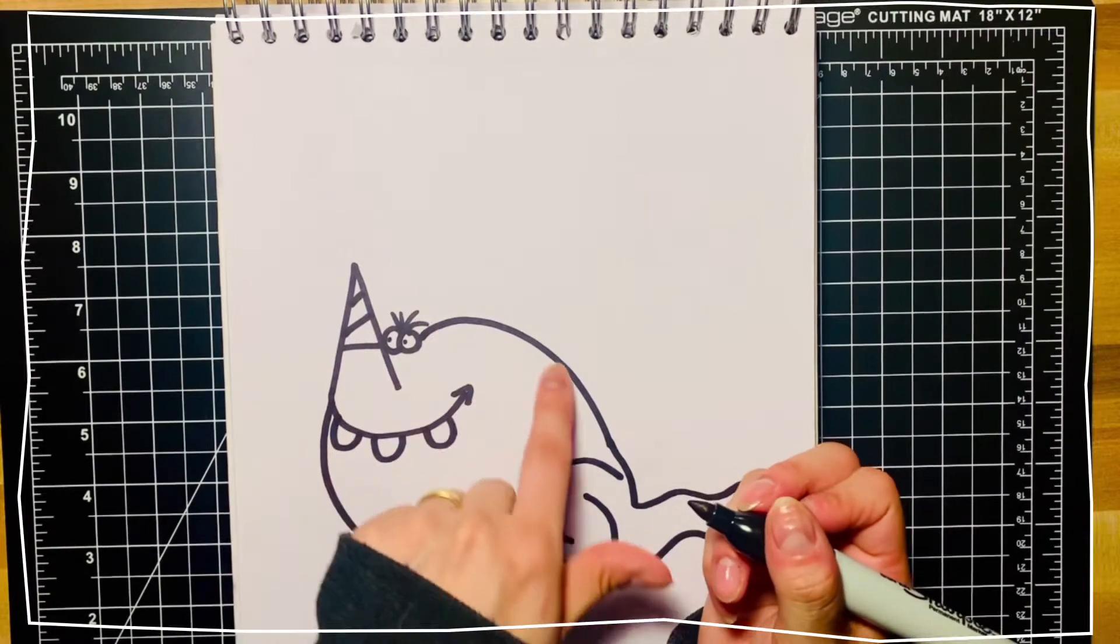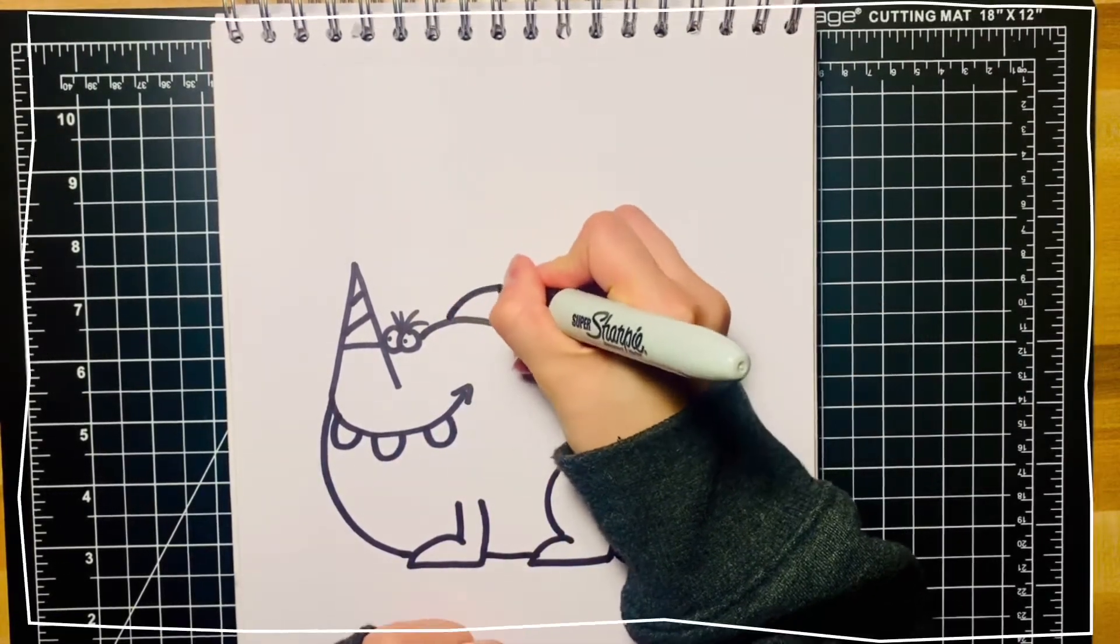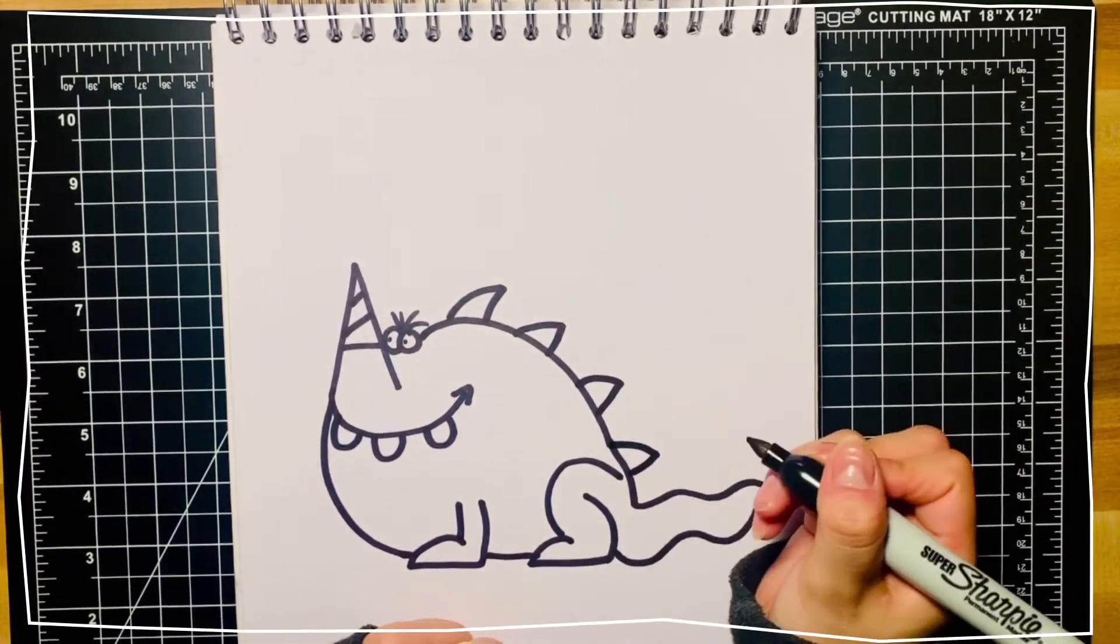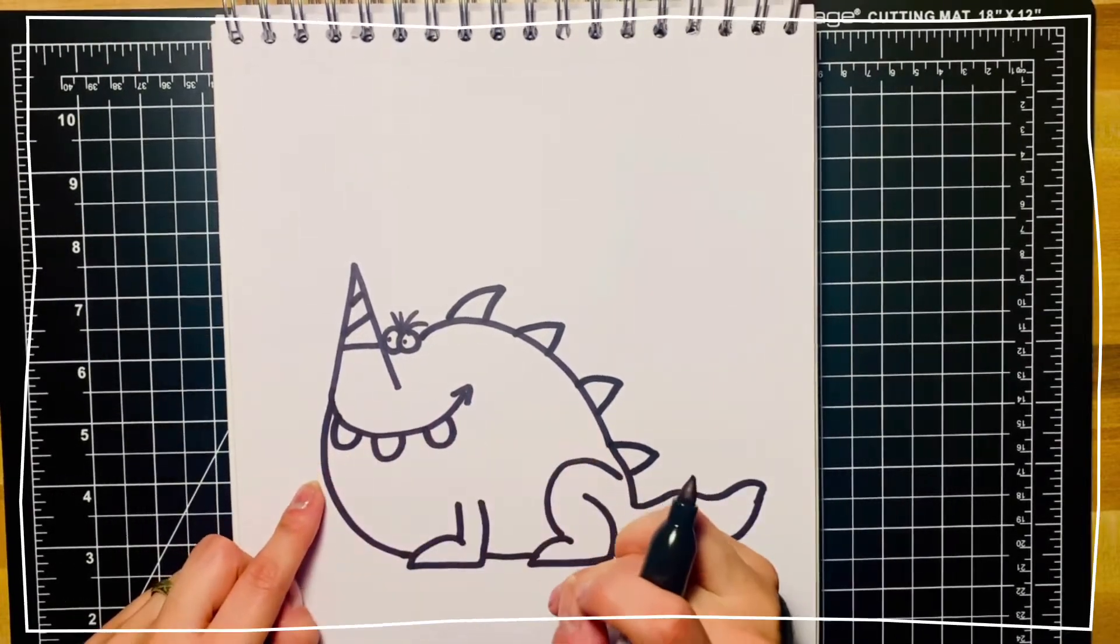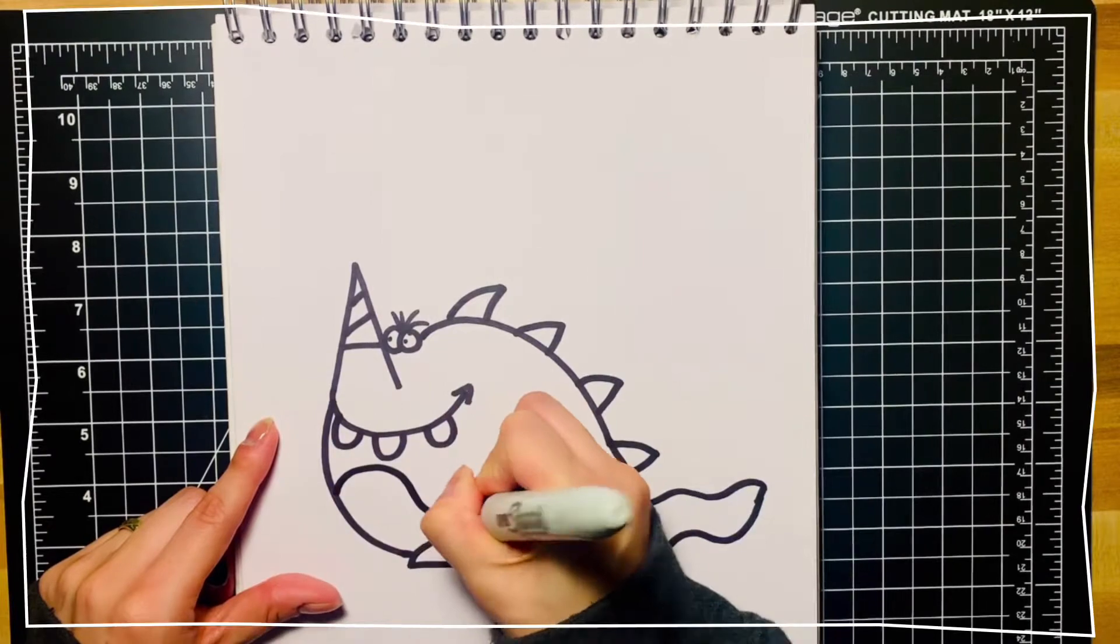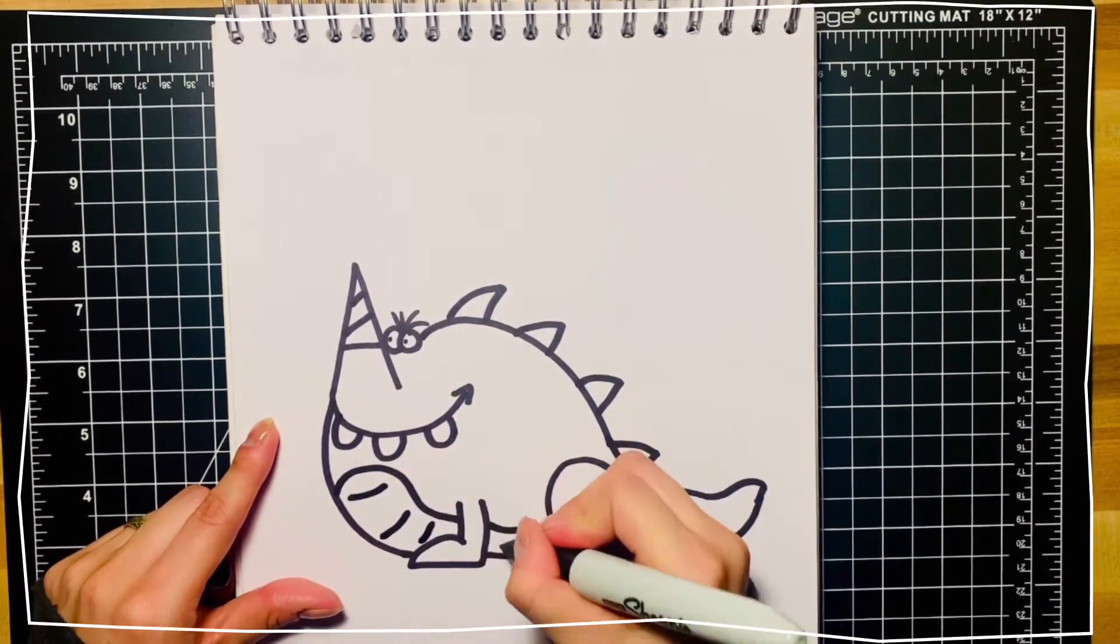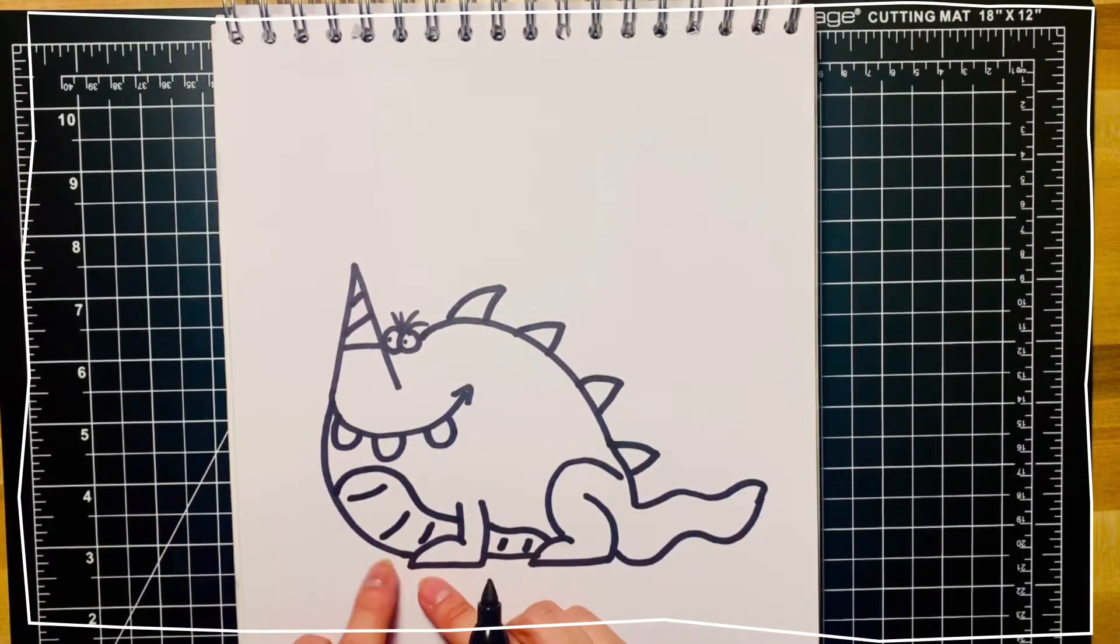We're going to give him some spikes on his back. And we're going to draw in his belly now. And don't forget, we're going to draw him a little front foot.